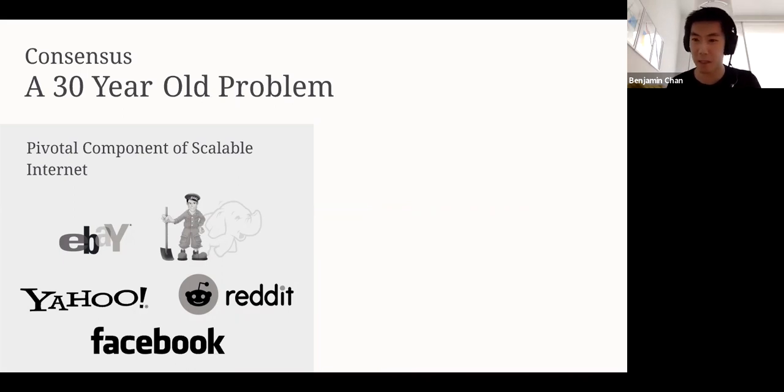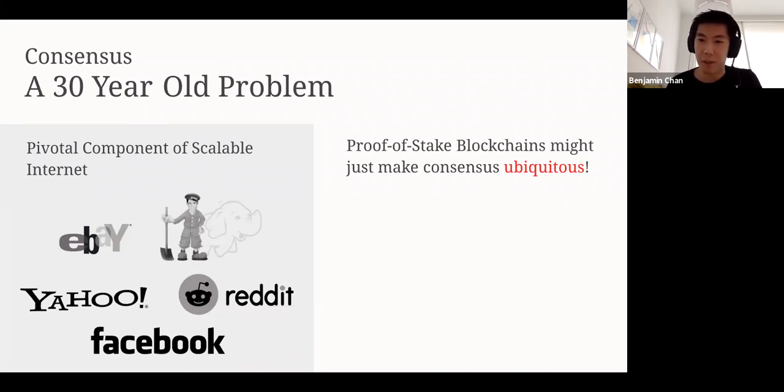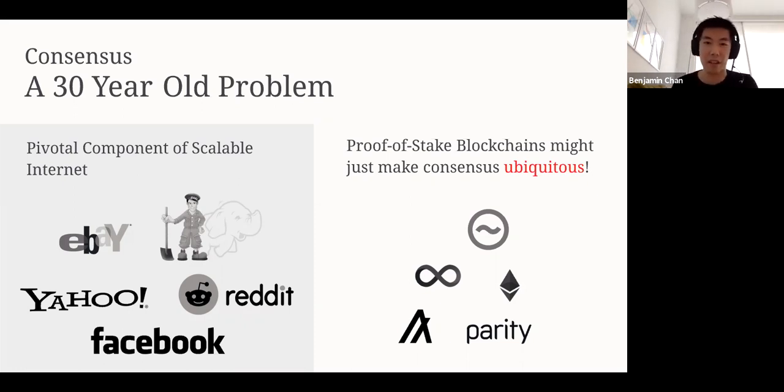Basically, if you choose any major technology company, I would bet you that they're using a consensus protocol under the hood to power either some sort of distributed data store or to synchronize clocks or something like that. So already, there's a big reason to study consensus. But more recently, and maybe one of the reasons we're all here, proof-of-stake blockchains have the potential to make consensus ubiquitous. Projects like Ethereum or Libra and Algorand, they all use permissioned consensus under the hood. For instance, you can elect a committee and then run permissioned consensus on it. Then you can use these cryptographic techniques to make the whole system more scalable. This potential impact makes it all the more important to study consensus and make it more simple.